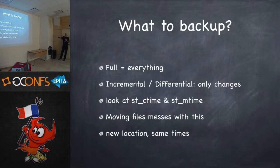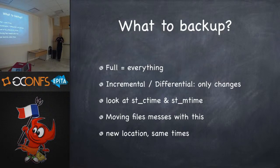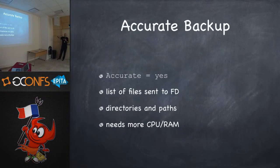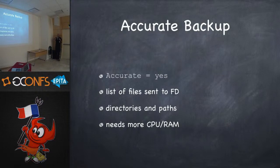An incremental restore will get all files restored even if they've been deleted from disk. There is a thing called an accurate backup: the director sends the FD a list of files it backed up last time, the FD compares that to what it finds, and ships over files that aren't in that list. So if you do a move, it'll take note of that and send it over — of course it comes at a cost. When backing up, it looks at ctime and mtime, so copying a whole tree won't trigger a backup if times are the same.